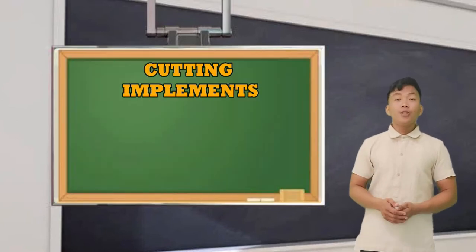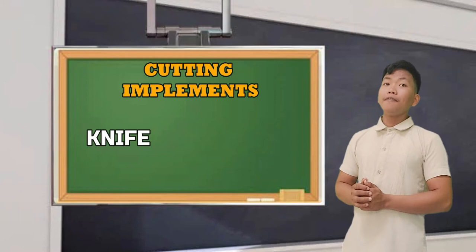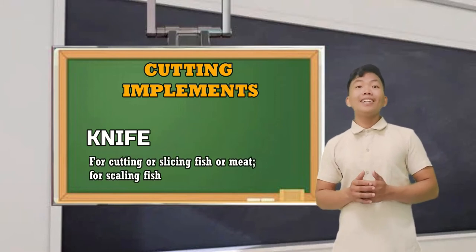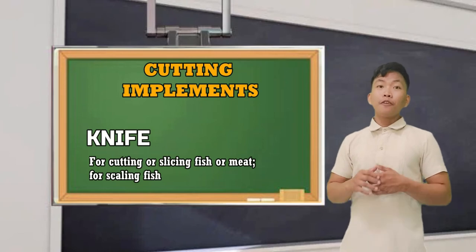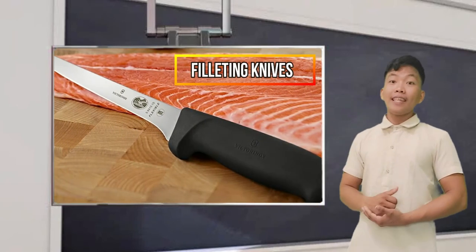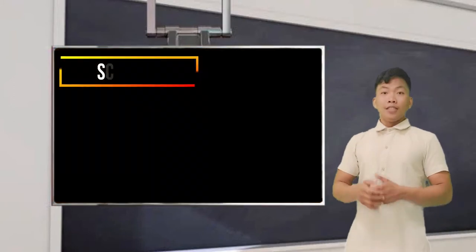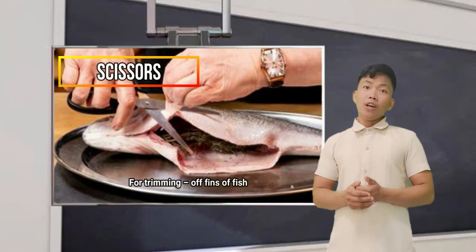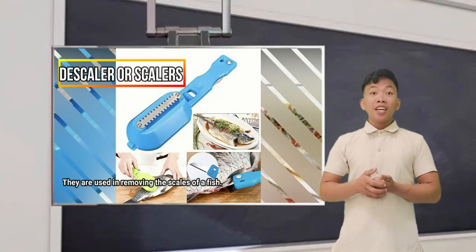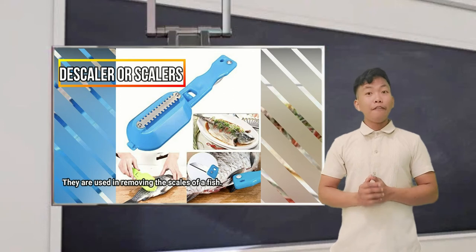Let's proceed to the cutting implements. We have a knife, used for cutting or slicing fish or meat and for scaling fish. We have the filleting knife for filleting fish. Scissors for trimming off fins of fish. Scalers are used in removing the scales of a fish.